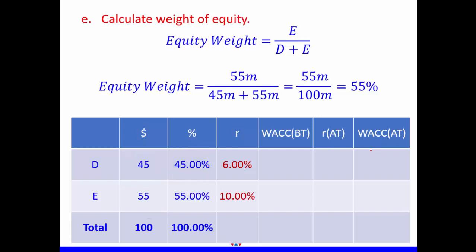The next part is to calculate the weight of equity. Weight of equity is market value of equity divided by the total: 55 divided by 100 gives us 55%. Remember, weight of debt plus weight of equity must always equal 100%. If it doesn't, there is something wrong in your calculation.